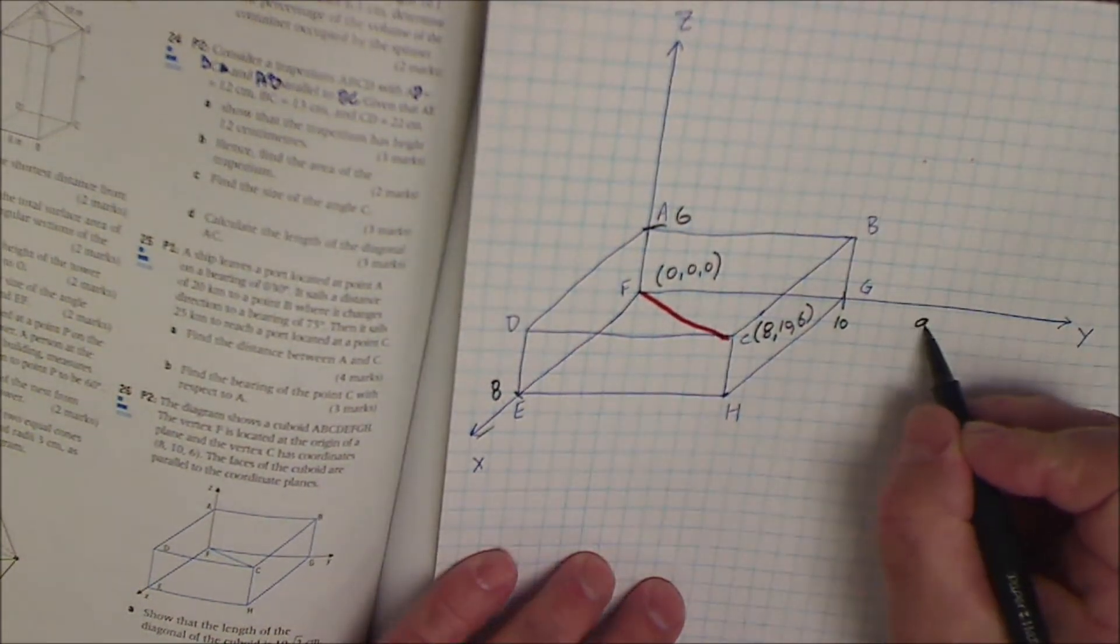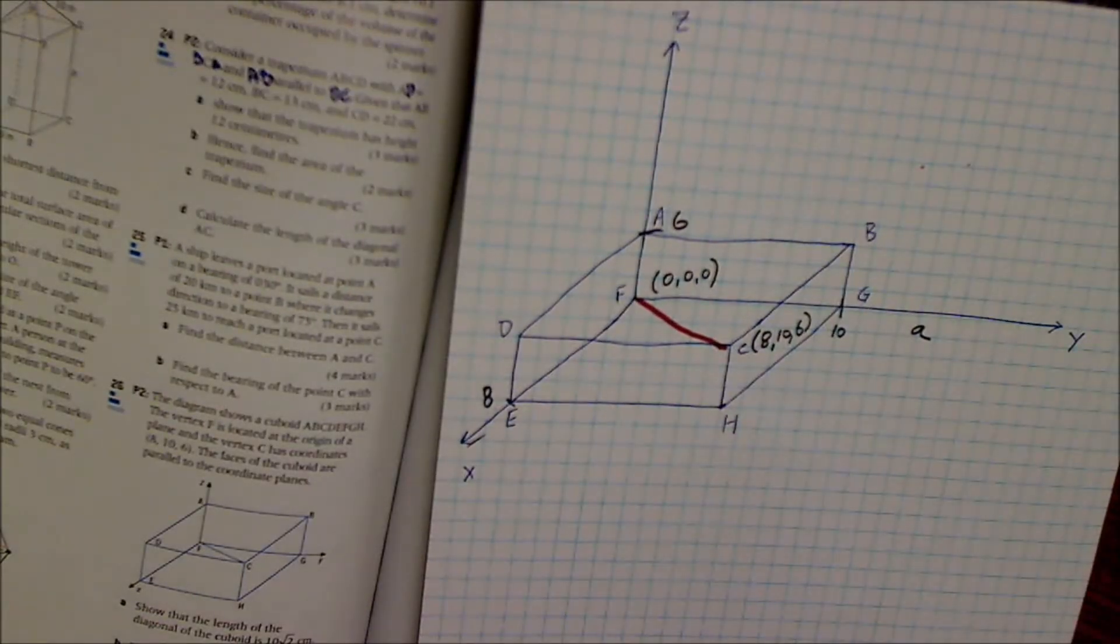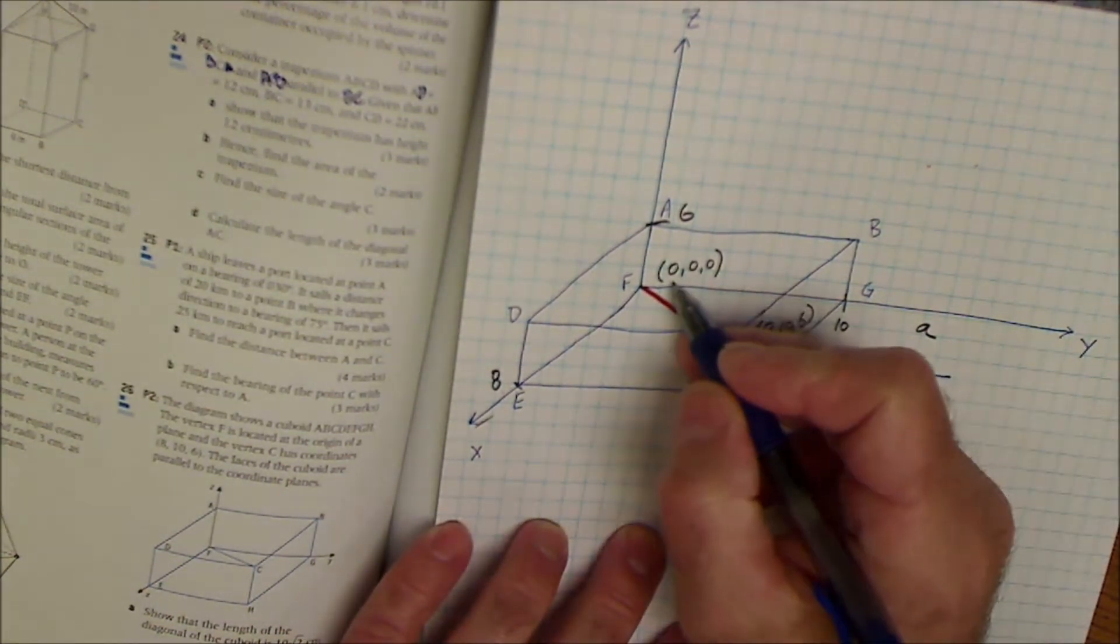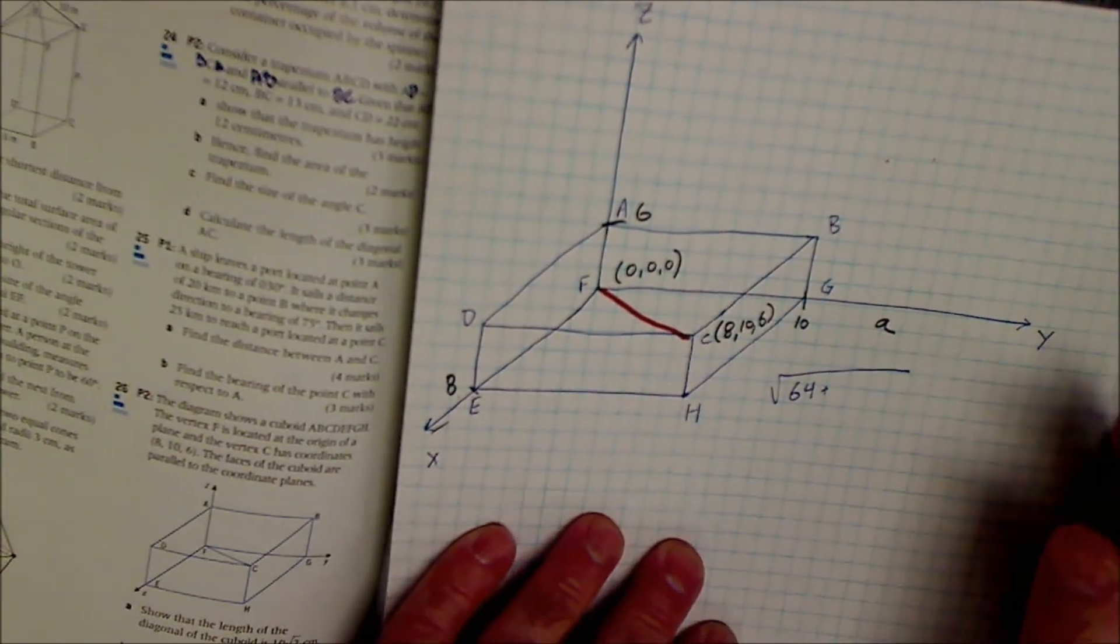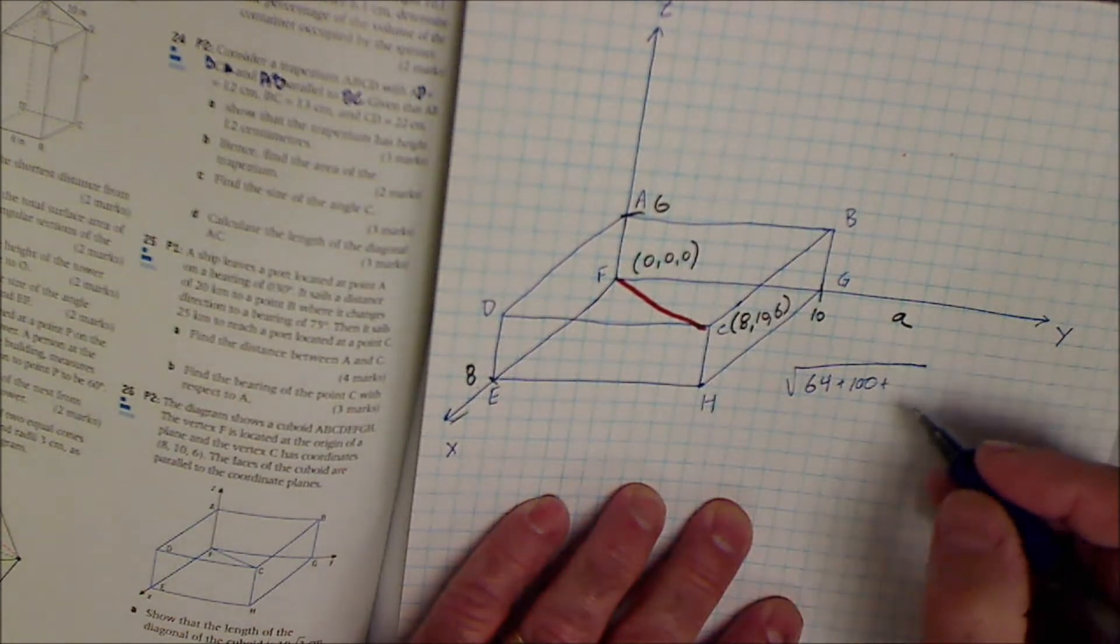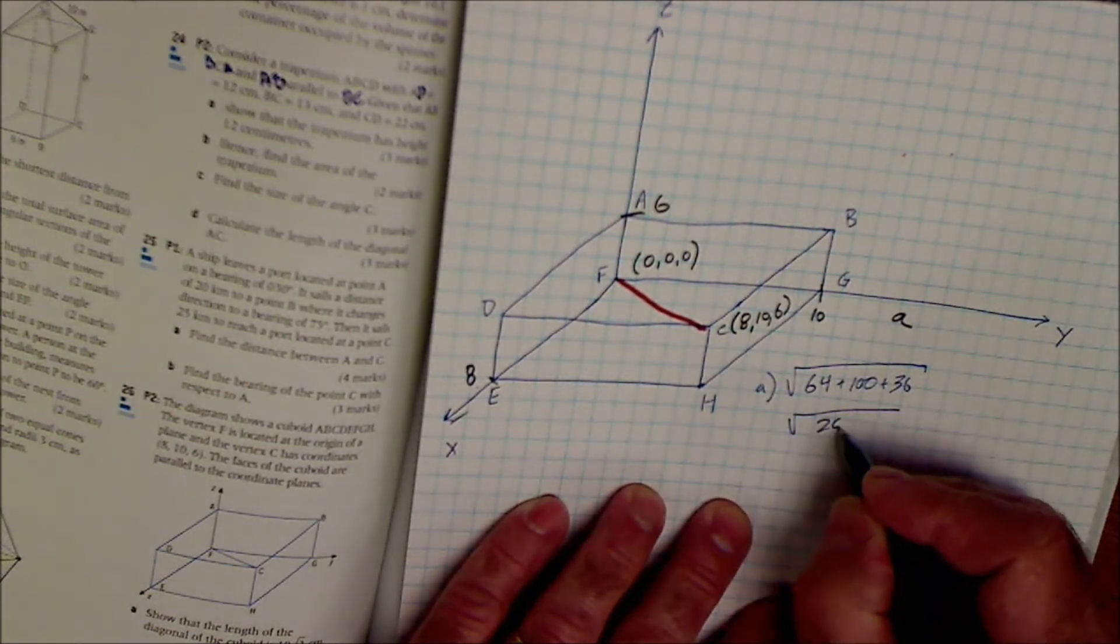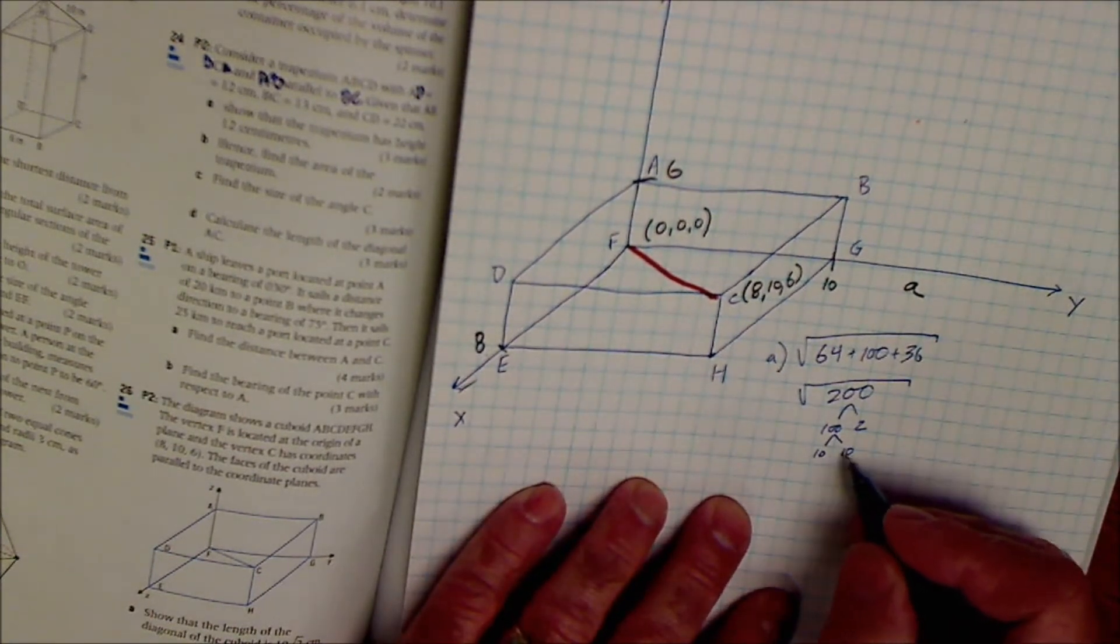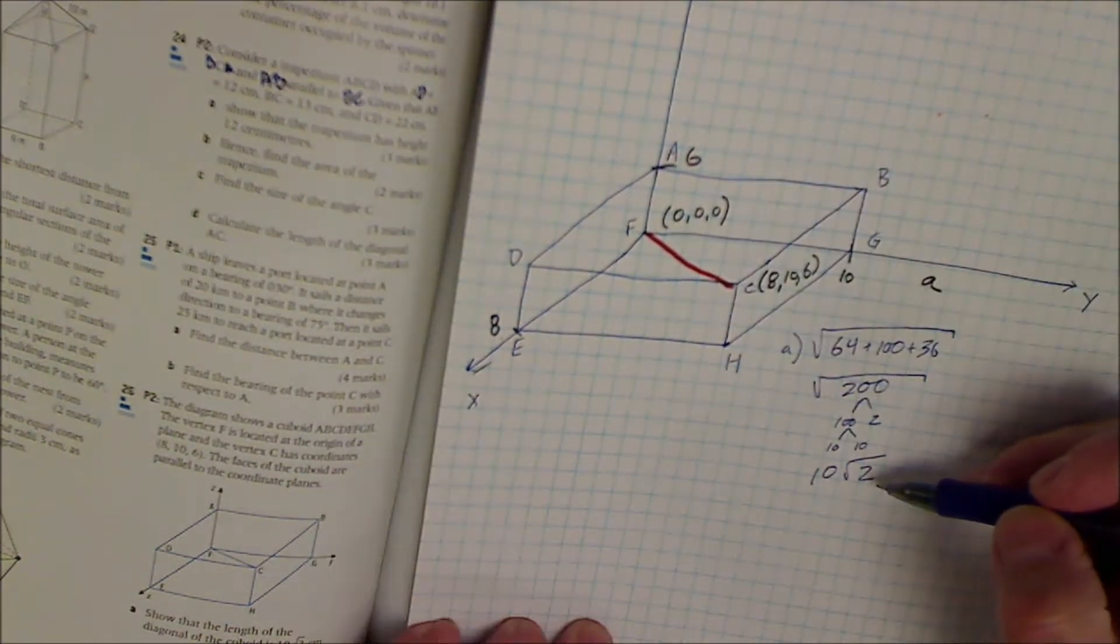Part A says find the length of the diagonal of the cuboid. So the way I'm going to do that is it's a three-dimensional distance formula. So it's going to be the square root of x2 minus x1, 8 minus 0 is 8 squared, plus y2 minus y1, 10 minus 0 is 10 squared, plus z2 minus z1, 6 minus 0 is 6 squared. So part A is the square root of 200. 200 is made up of 100 and a 2, 100 is a pair of tens. For every pair one comes out, that leaves me with 10 root 2. And I use a three-dimensional Pythagorean theorem to do that.